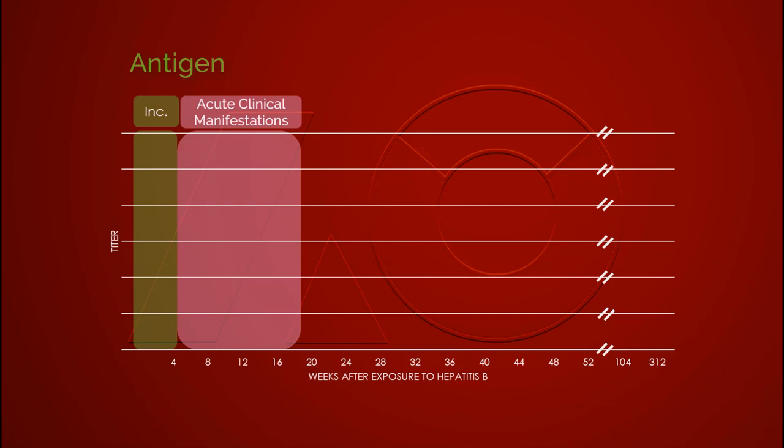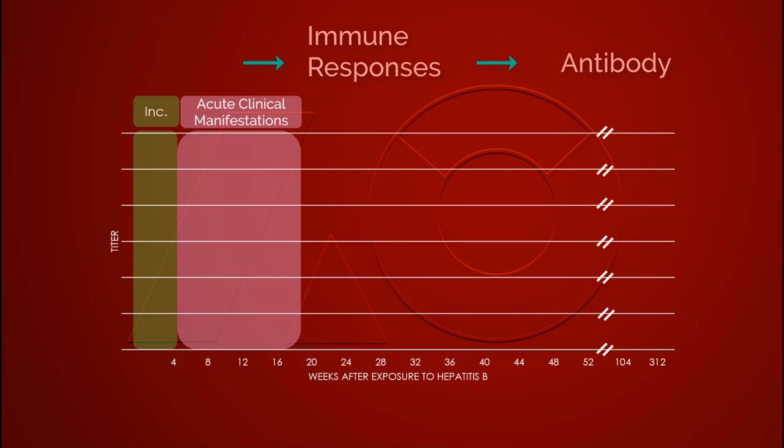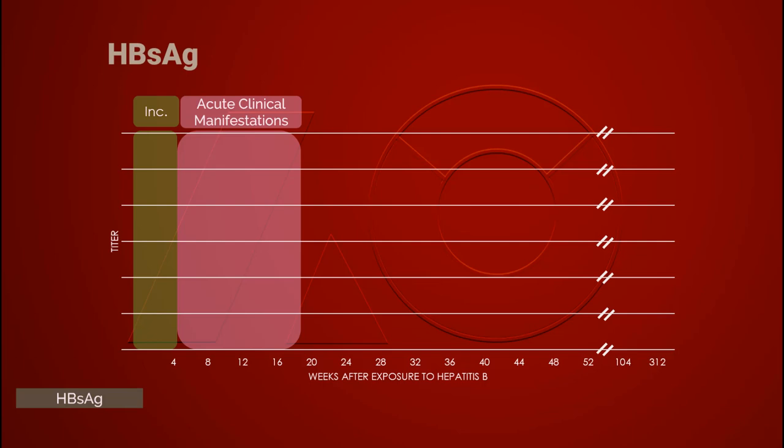Before we study individual antigens and antibodies, let's establish one logical reasoning: antigens will be present in the blood before antibodies, because antigens trigger our immune responses which produce antibodies. In other words, without antigen there will not be antibody.